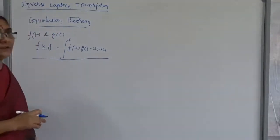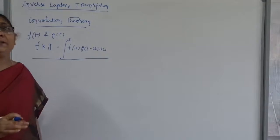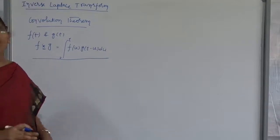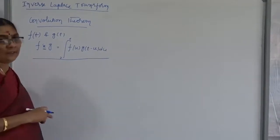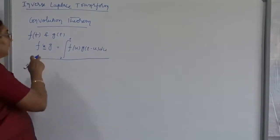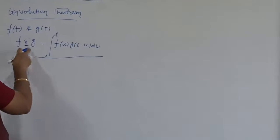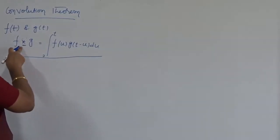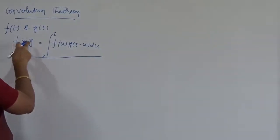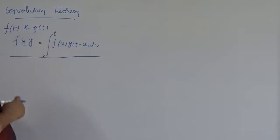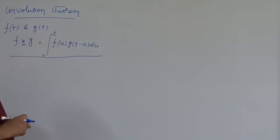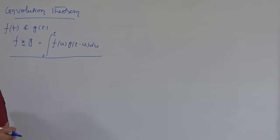Here, I consider 2 functions with the condition that both functions are defined on the same variable. The convolution of 2 functions f and g is denoted by the star notation. The definition is: the integral from 0 to t of f(u) times g(t minus u) with respect to u.